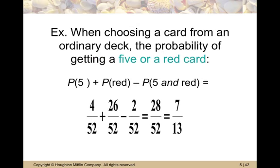When choosing a card from an ordinary deck, the probability of getting a five or a red card is: P(five) plus P(red) minus P(five and red), because five-and-red has been counted twice. There are four fives in 52 cards, and 26 cards are red. The cards that are both five and red are the five of hearts and the five of diamonds — two cards. So we get four plus 26 minus two equals 28 out of 52, which reduces to seven thirteenths.